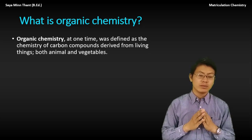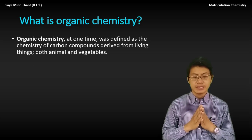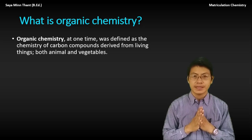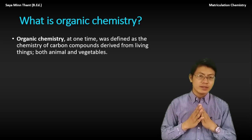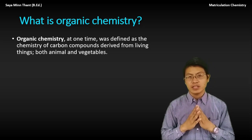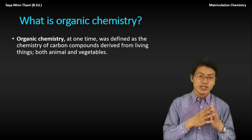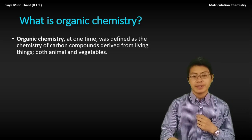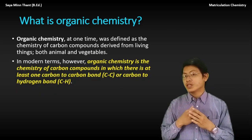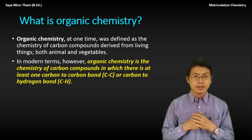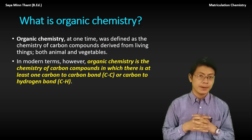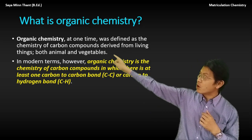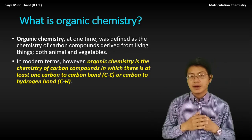Organic chemistry — in terms of living things, we can start from living things, from animals and vegetables. So, organic chemistry is the chemistry of carbon compounds. Organic chemistry is the chemistry of carbon compounds.